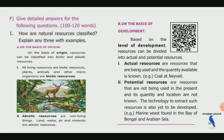On the basis of development, resources can be classified into actual and potential. Actual resources are those whose quality is known and are currently being used. Examples are coal and petroleum — coal has many uses and is an actual resource. We have thermal power plants that use coal.